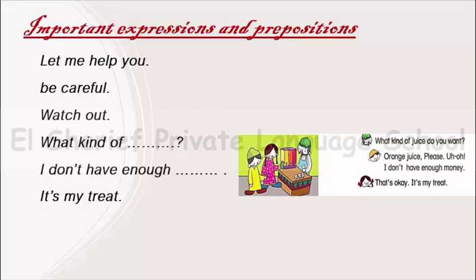In this picture, we will read it. We have seen it before in unit 2. 'What kind of juice do you need?' — we use it to ask about which kind of thing you need. The answer: 'Orange juice, please.' 'I don't have enough money' means I don't have enough money to pay. 'It's my treat' means I will pay the money for you.